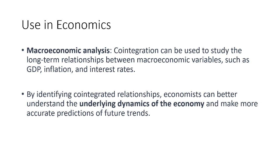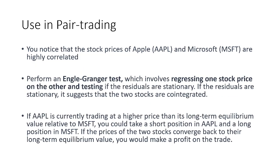By finding a co-integrated relationship, economists can understand the underlying dynamics of the economy and the relationship between different economic indicators like GDP, inflation, and interest rates. The central bank or government can then take necessary action — mostly on the monetary policy side through the central bank, though governments can also take steps based on fiscal considerations.